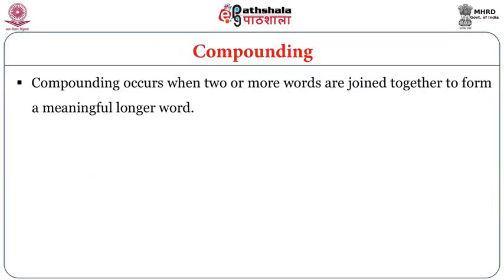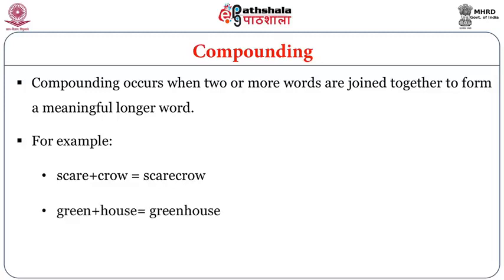Compounding occurs when two or more words are joined together to form a meaningful longer word. For example, 'scare' and 'crow' are two different words, but 'scarecrow' presents an altogether different meaning. 'Green' is a colour and 'house' is an object, but 'greenhouse' is a different object altogether. Similarly, 'bitter' and 'sweet' become 'bittersweet' — many compound words create a new meaning from two different words.